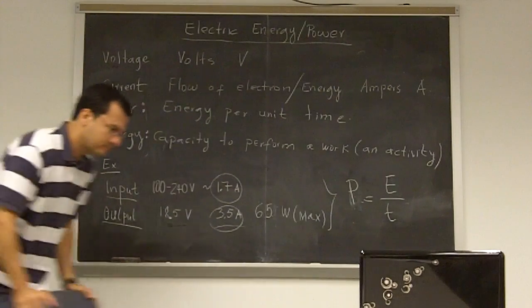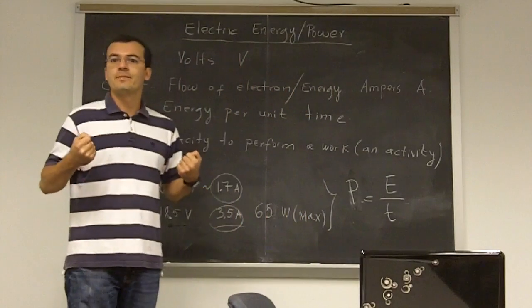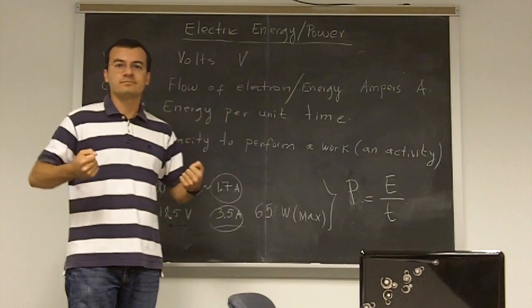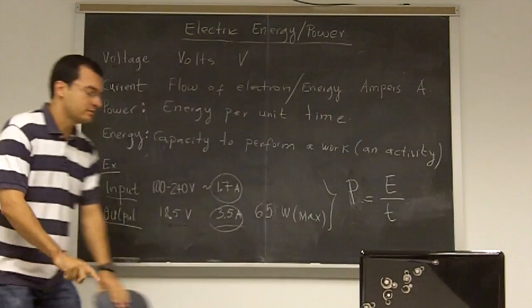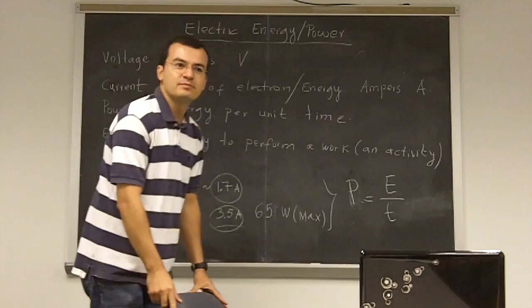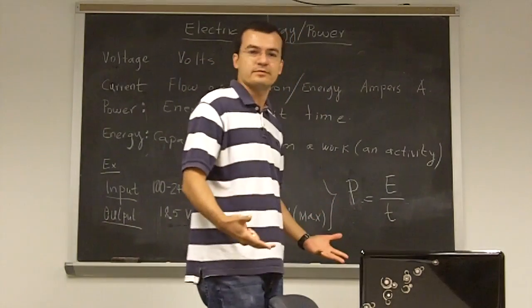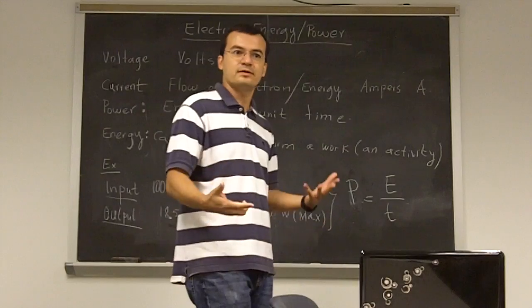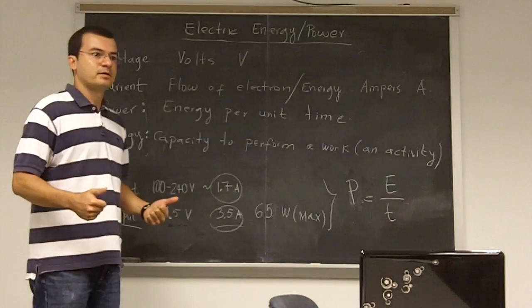So this means that when I do this faster, I am using more power, you know, because I am probably stronger, you know? If I do it slowly, slowly, I'm not using that much power, you know? But I am spending the same energy because I am doing the same activity, you know? You got the idea of the difference of power?